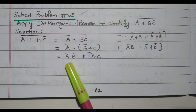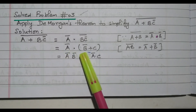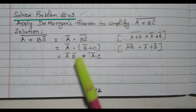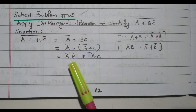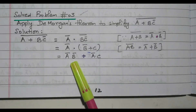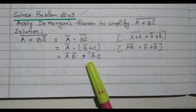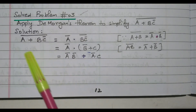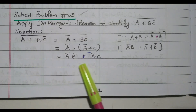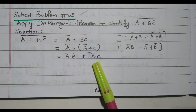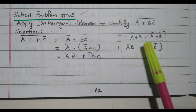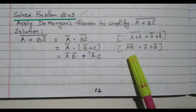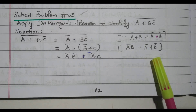Now we will multiply inside, giving A-bar dot B-bar plus A-bar dot C. So we got A-bar B-bar plus A-bar C. This given expression is simplified using both De Morgan's theorems: A plus B the whole bar equals A-bar dot B-bar, and AB the whole bar equals A-bar plus B-bar.